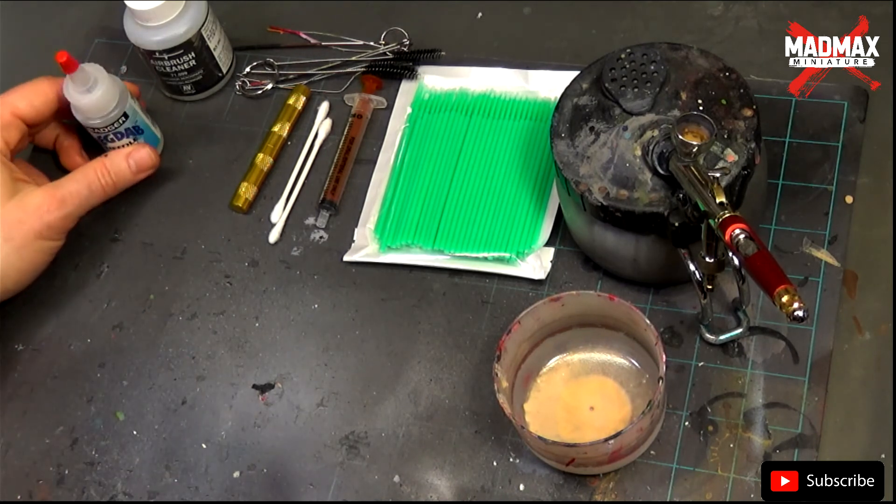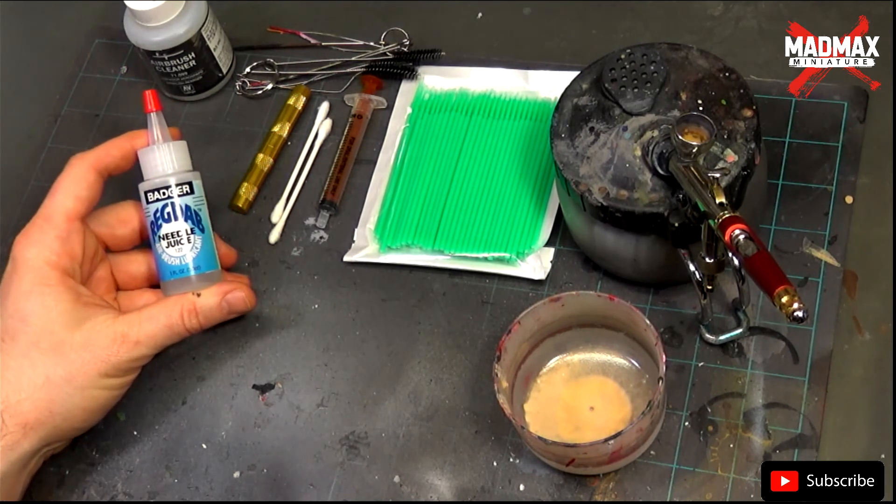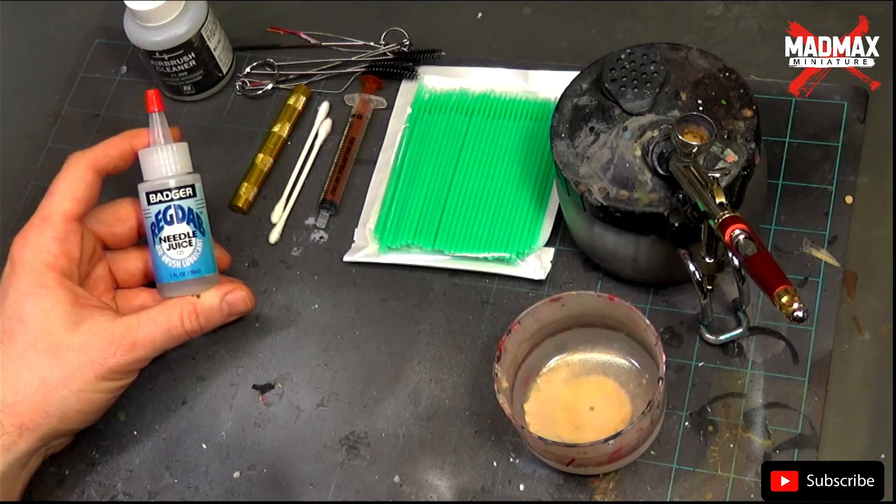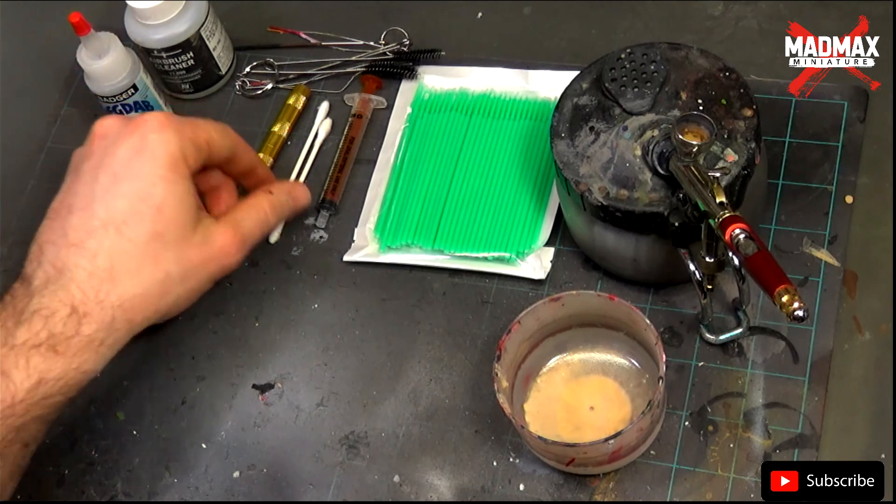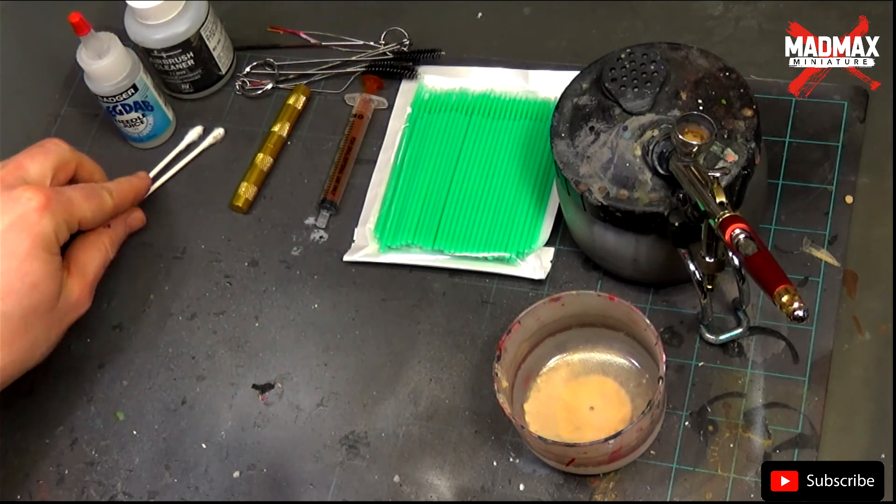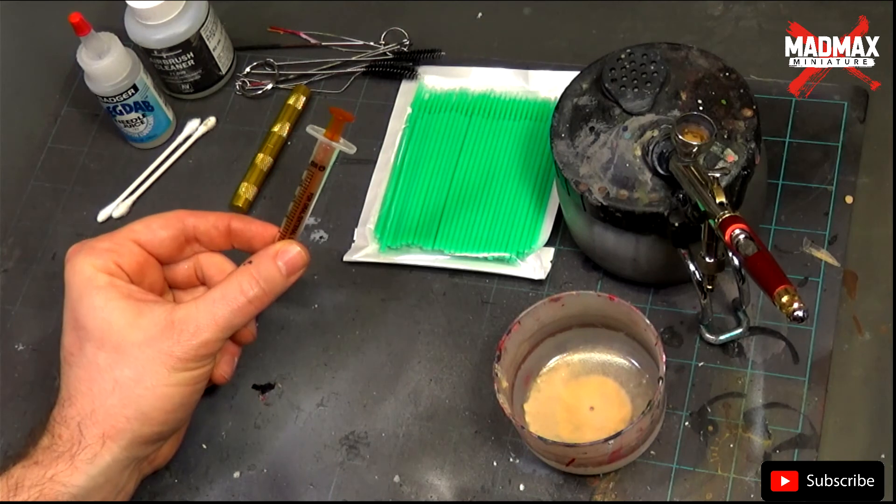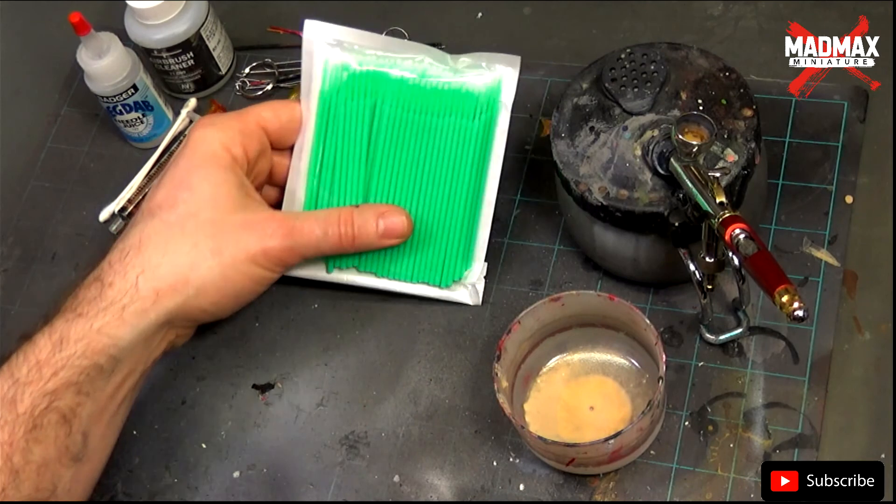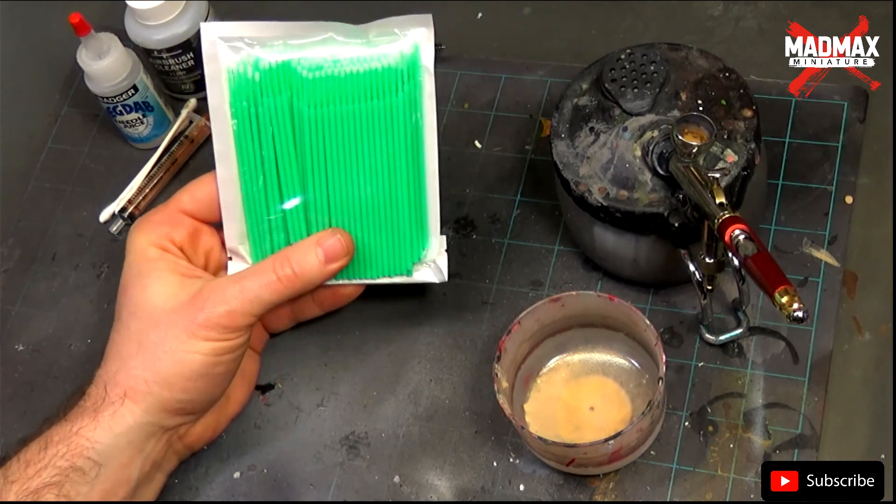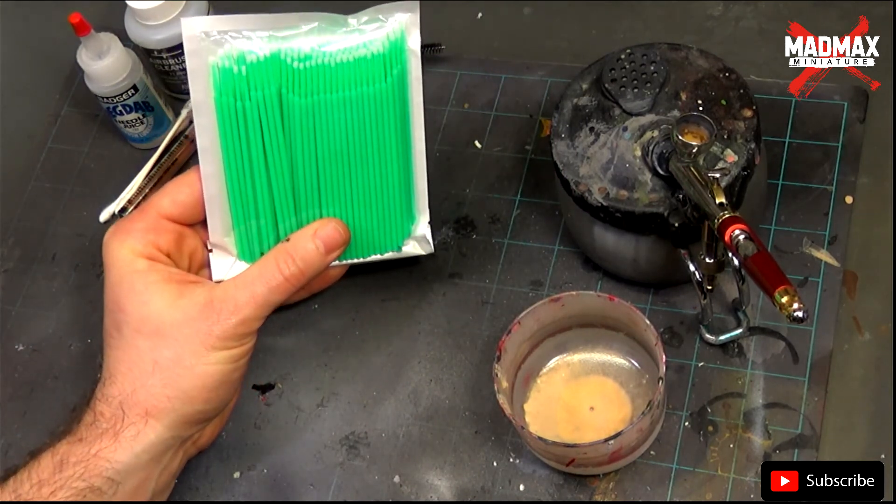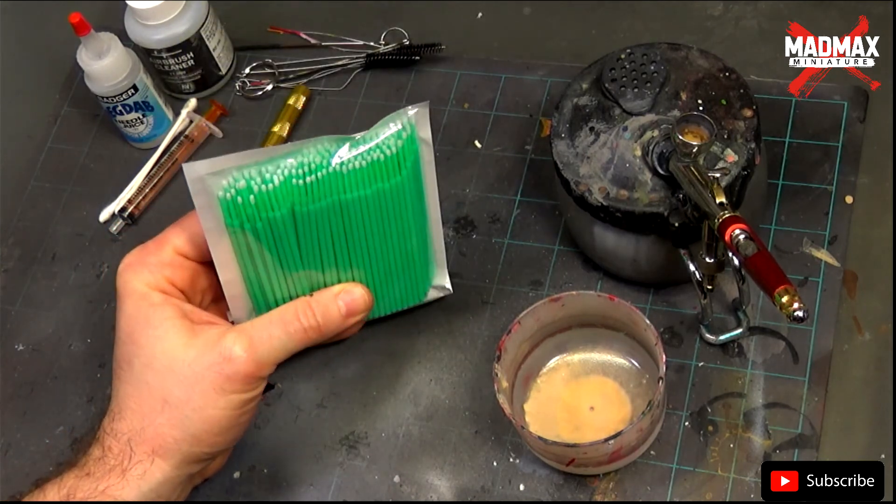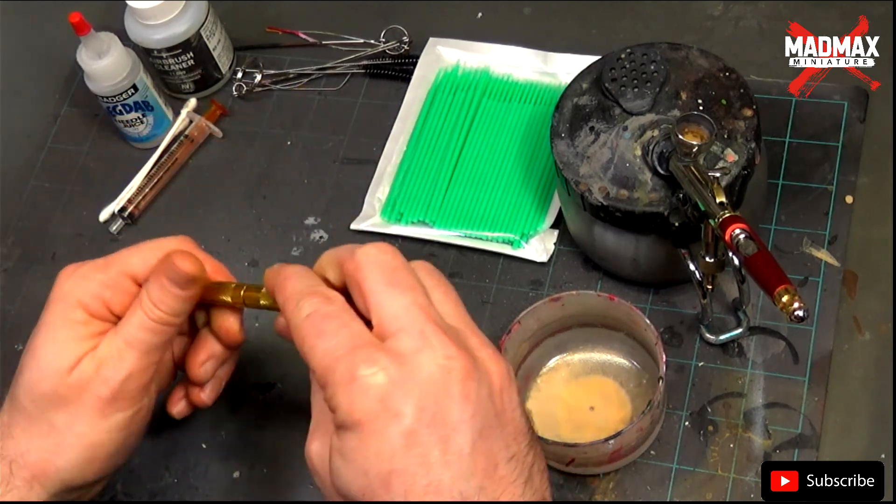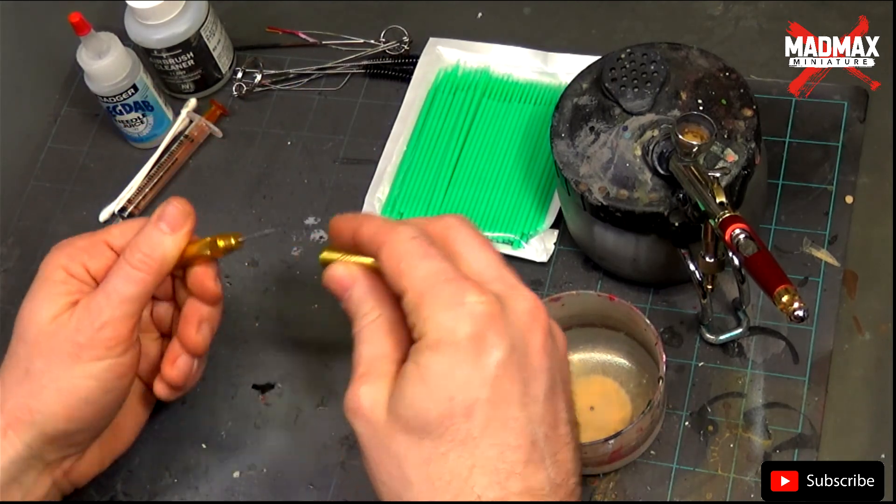You will also need some needle juice for the needle and trigger, some Q-tips, a pipette or a syringe, some dental swabs - they can be paper swabs. You can find these on Amazon for really cheap. You also need a nozzle cleaning tool like this one.